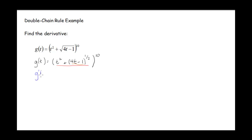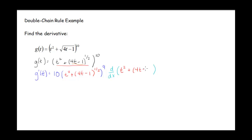We go step by step, starting on the outside and working our way in. So for g prime of t, we deal with the outermost function first: 10 times that inside thing to the 9th. So we have (t squared plus 4t minus 1) to the 1/2, all raised to the 9th, and then we multiply by the derivative of that inside function — we're still working on that derivative of (t squared plus 4t minus 1) to the 1/2.